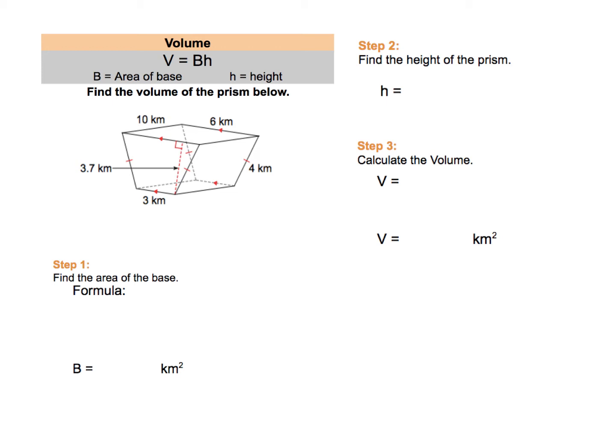So let's look at this first example. It asks us to find the volume of the prism below and you can see that the prism here has two trapezoidal bases. The front is a trapezoid and the back is an identical trapezoid. Because the base is a trapezoid, we need to go and find the formula for the area of a trapezoid. Because to calculate the area of the base, we need to find the area of that trapezoid.